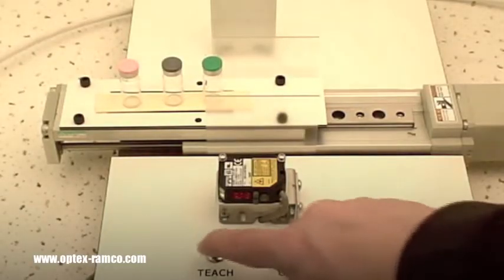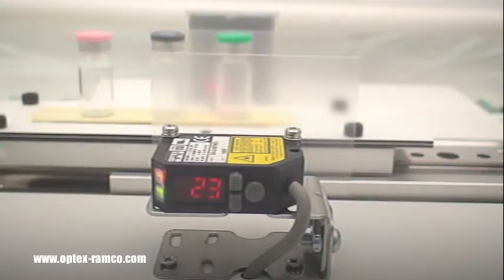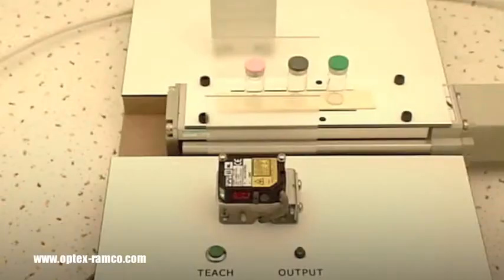While the sensor is looking through the translucent plates, press the teach button and the sensor automatically adjusts the sensitivity level so that the output is off while the sensor is looking through the translucent plates.